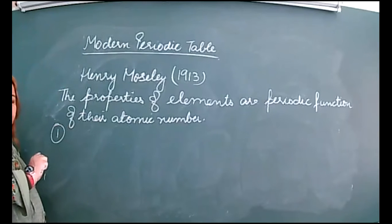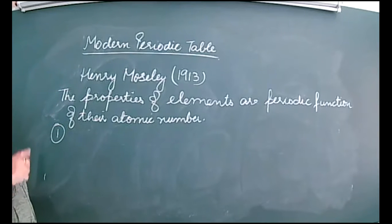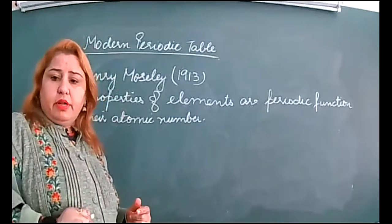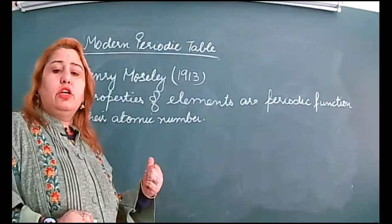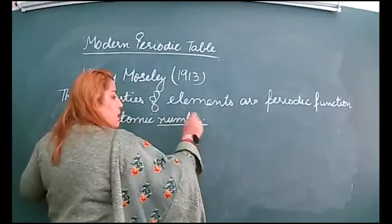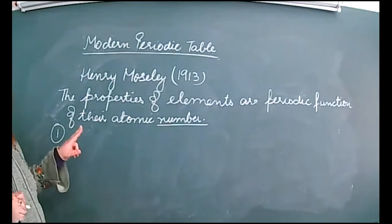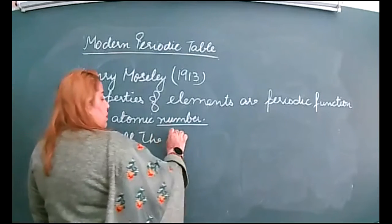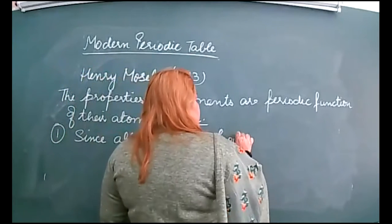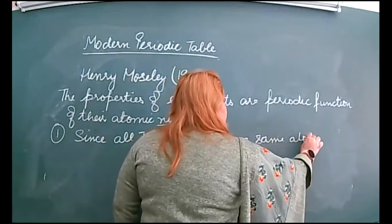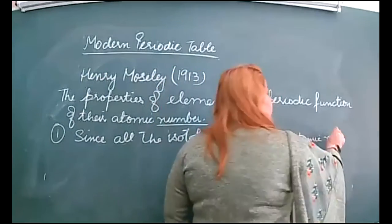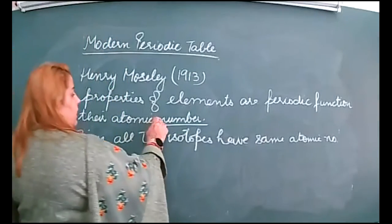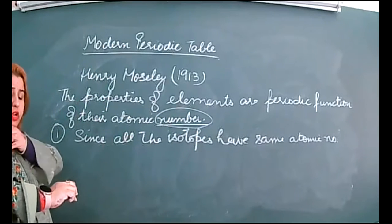The first limitation was that Mendeleev's periodic table couldn't explain the position of isotopes. Isotopes have the same atomic number but different mass numbers. Mendeleev's table was based on increasing atomic masses. When the basis was changed to atomic number, the first drawback was resolved — since all isotopes have the same atomic number.